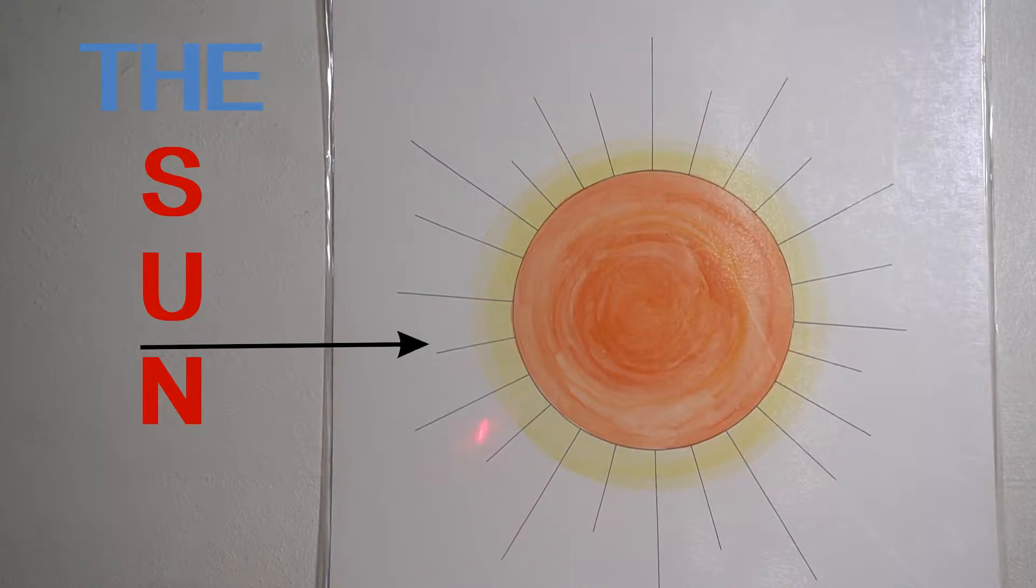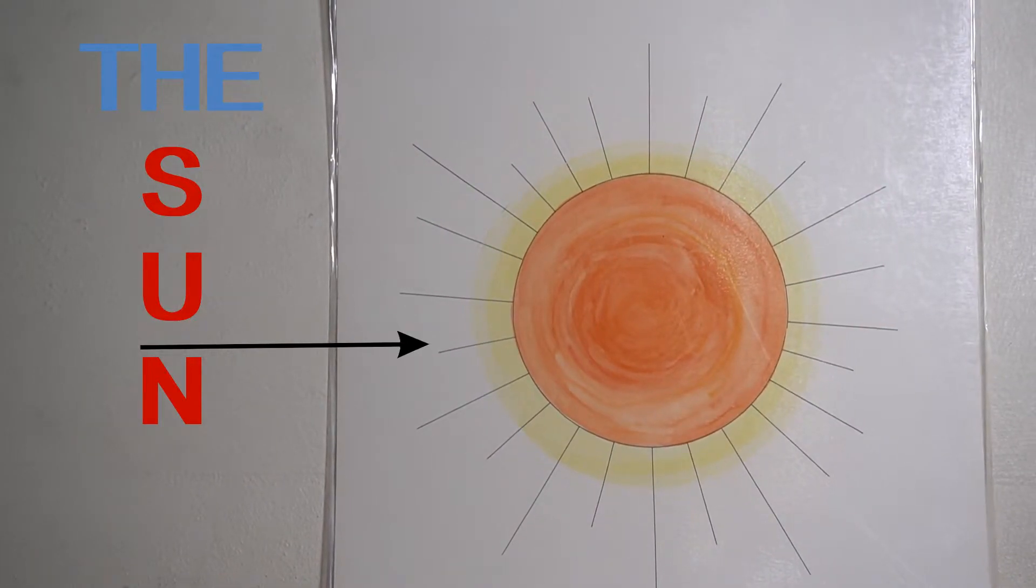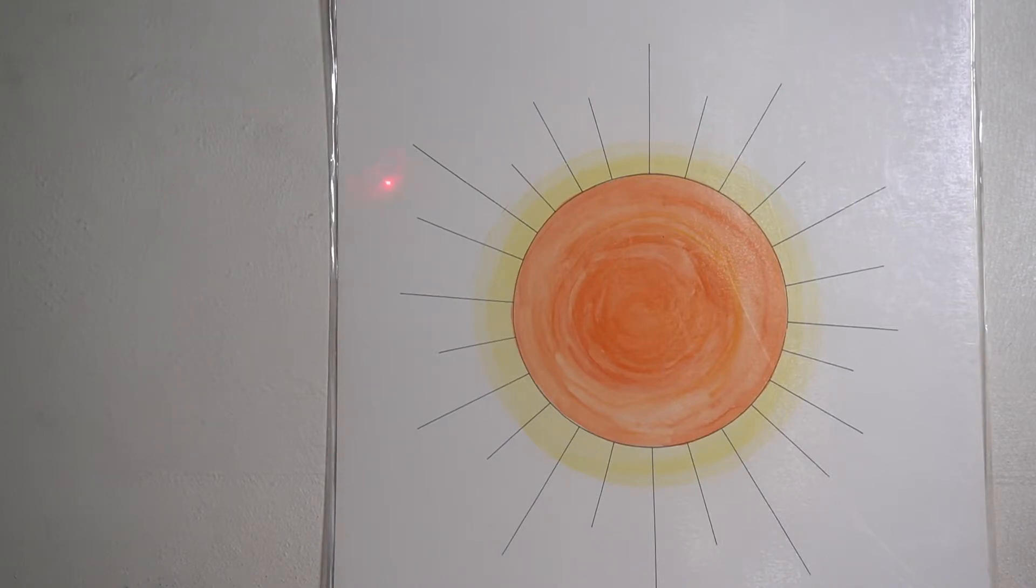On our chart here we have the sun. The light that comes from the sun is represented by these lines.